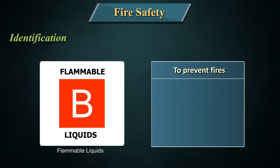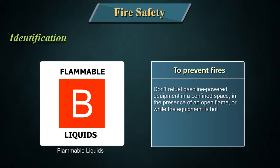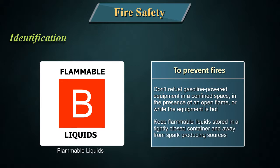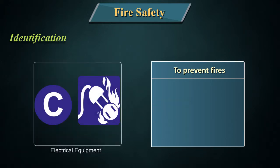Symbol for flammable liquids: Extinguishers for Class B fires are identified by a square containing the letter B. If coloured, the square is red. To prevent fires: don't refuel gasoline-powered equipment in a confined space in the presence of an open flame or while the equipment is hot. Keep flammable liquids stored in a tightly closed container and away from spark-producing sources.